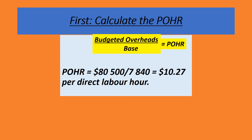First, we calculate the POHR — the pre-determined overhead rate. The formula is budgeted overheads divided by budgeted direct labor hours. So our POHR would be $80,500 divided by 7,840 direct labor hours, which equals $10.27 per direct labor hour.